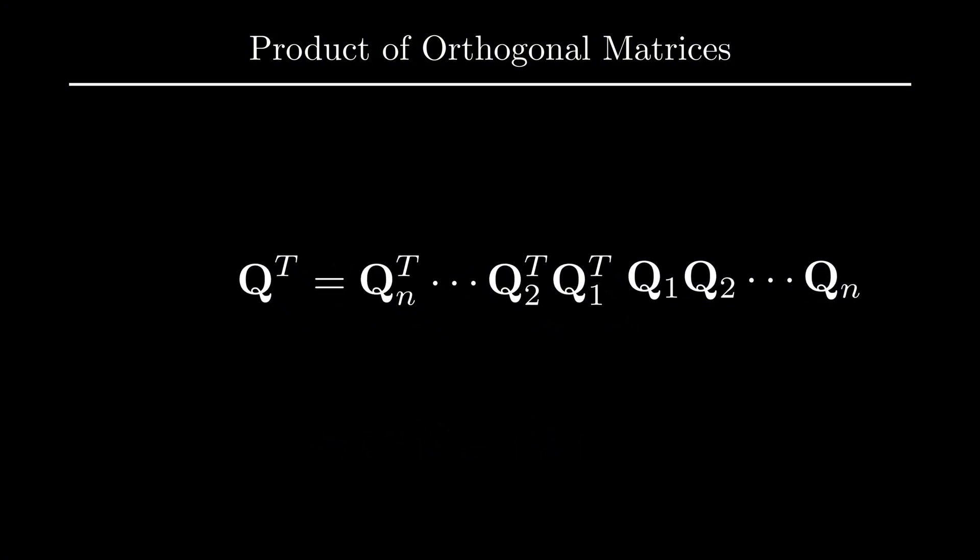Now if we multiply Q transpose by Q, we can see that the inner two matrices will simply give us the identity. This carries on with the rest of the matrices, and we end up getting that Q transpose times Q is the identity. Hence we have proven that the product of orthogonal matrices is also an orthogonal matrix.